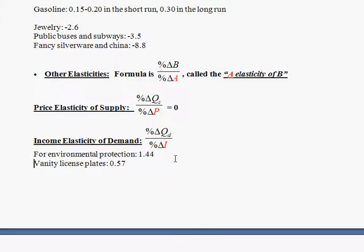Vanity license plates, this was an interesting one. This is when you get a license plate that says I'm cool or go Duke, something like that. People have found that income elasticity of demand is inelastic, whereas for environmental protection it's elastic because the top is larger than the bottom. So this would mean that for each 1% increase in income, about a 0.57% increase in vanity license plates will be purchased. So it's a normal good. Both of these are normal goods because as income goes up, the quantity demanded goes up, but this is elastic and this one is inelastic.